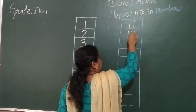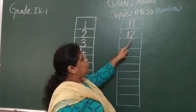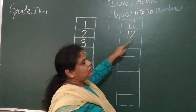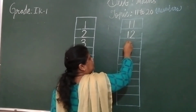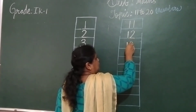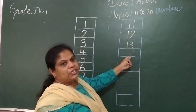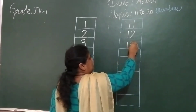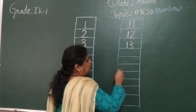Next. One, two — 12. One, two — 12. Next. One, three — 13. One, three — 13.